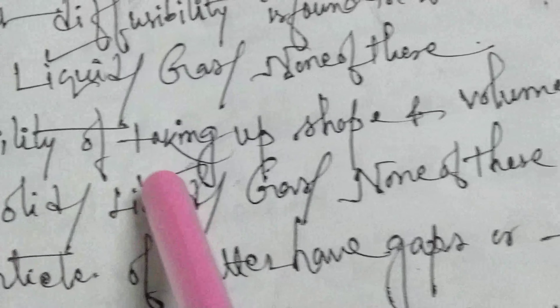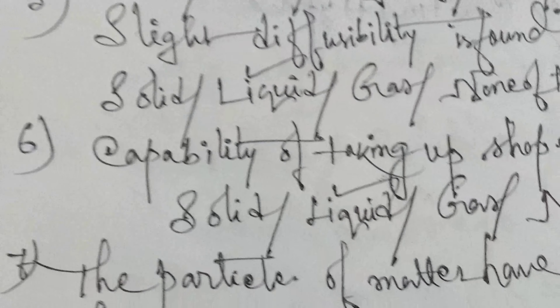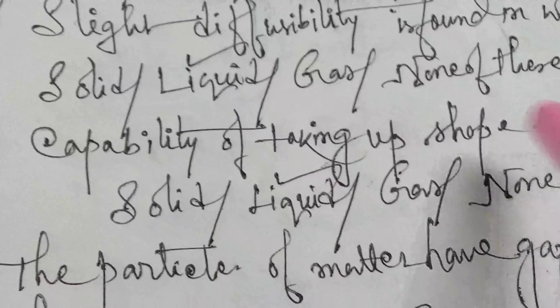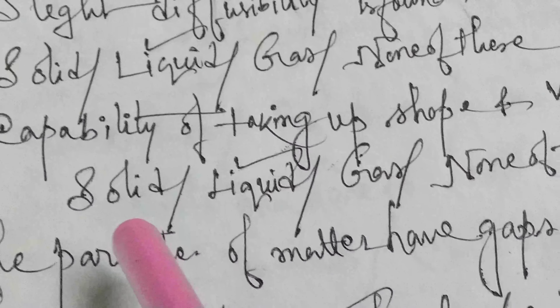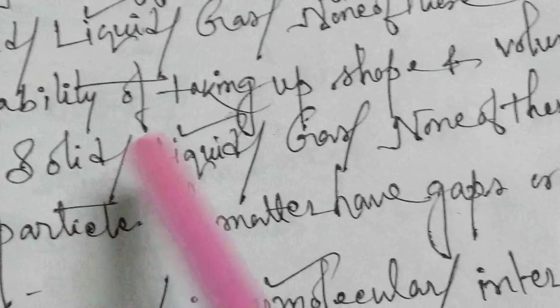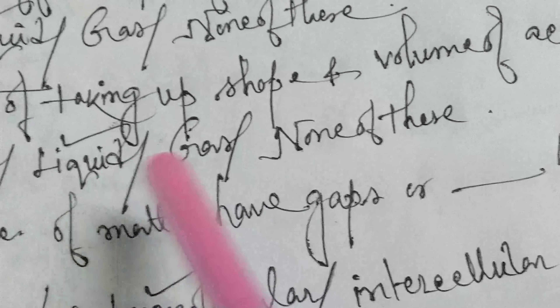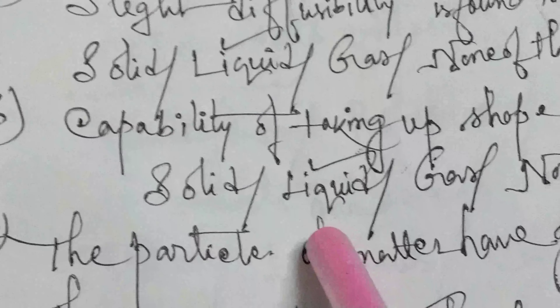The capability of taking up the shape and volume of a container — this ability is basically found in which state of matter? Solid, liquid, gas, or none of these. The answer is liquid.